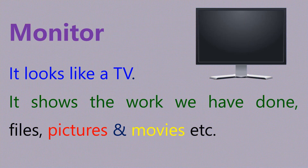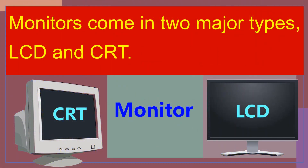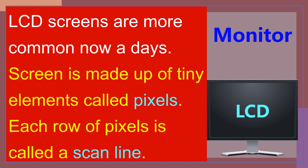The monitor looks like a TV. It shows the work we have done — files, pictures, and movies. Monitors come in two types: LCD and CRT. LCD screens are more common nowadays.